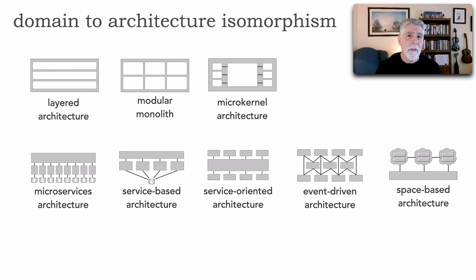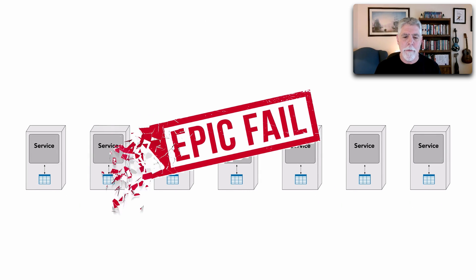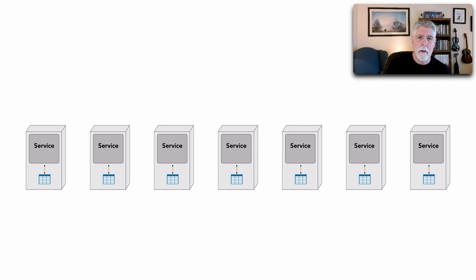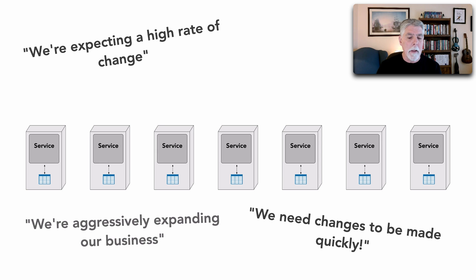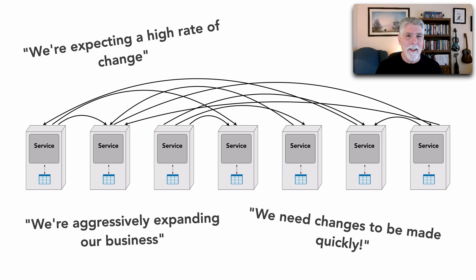Every architecture style has a particular shape to it — and that's what part two of Domain to Architecture Isomorphism, in two weeks, will cover: the shape of every one of these. It also turns out that every problem has a shape as well. Let's take that first epic failure. The shape of this particular problem: we're expecting a high rate of change, changes need to be done quickly, and we're aggressively expanding our business. We chose an architecture style that matched that particular shape. But there was one other part of the shape of this problem we didn't take into account — and that was high semantic coupling.